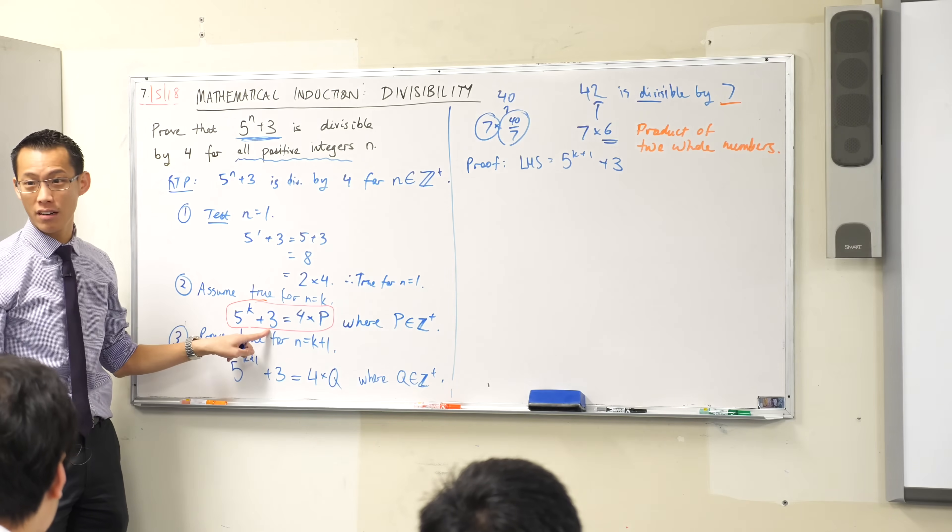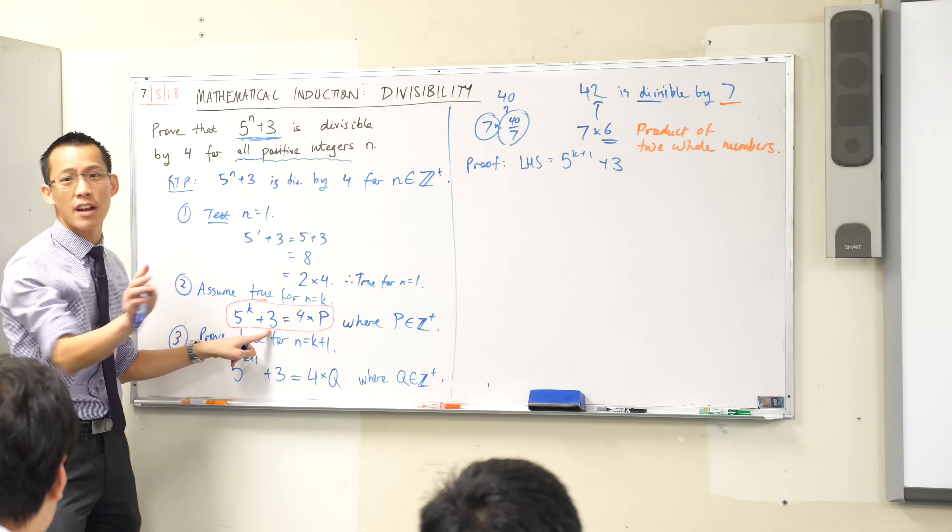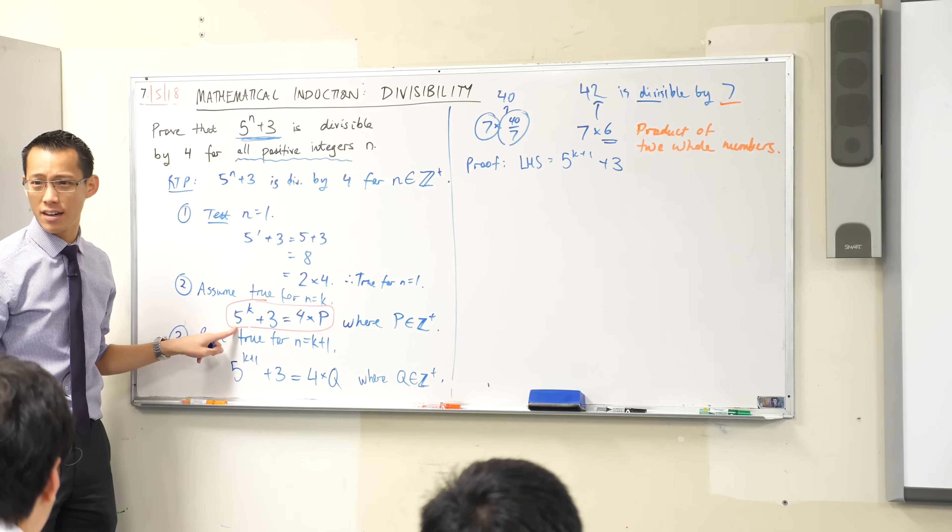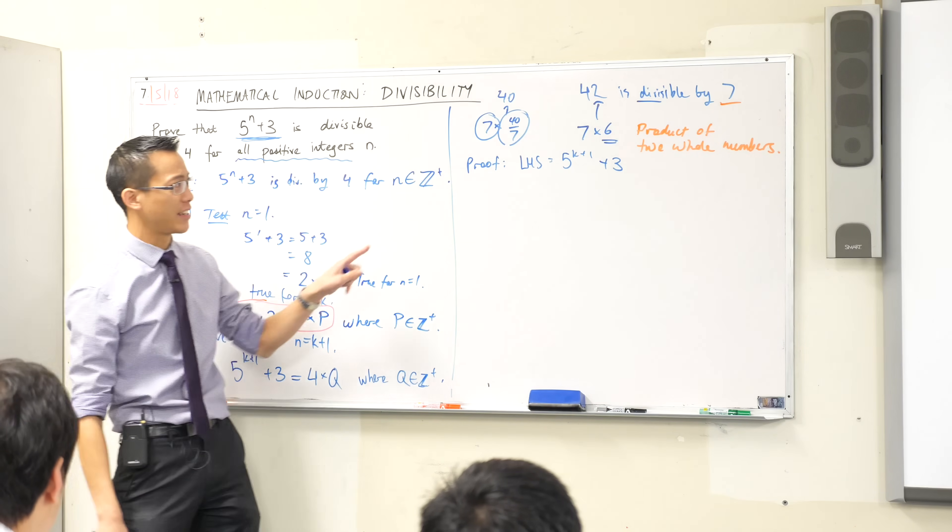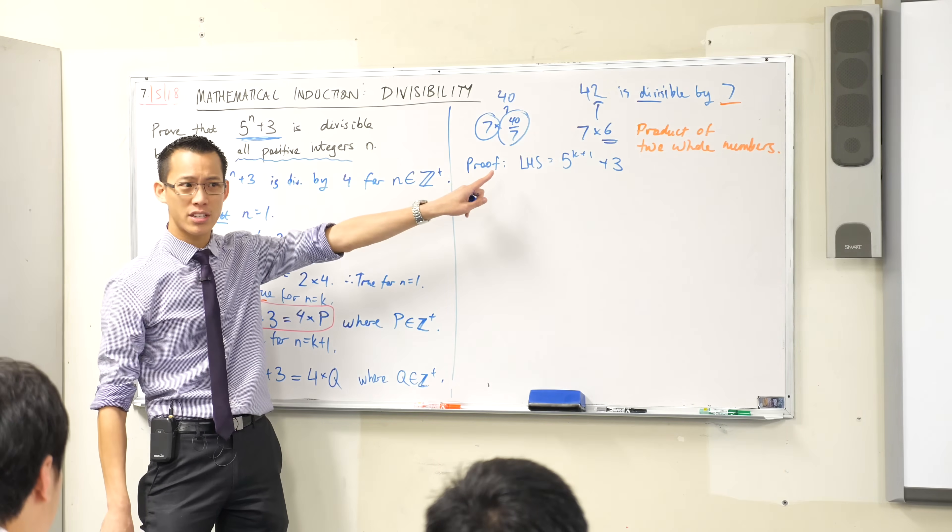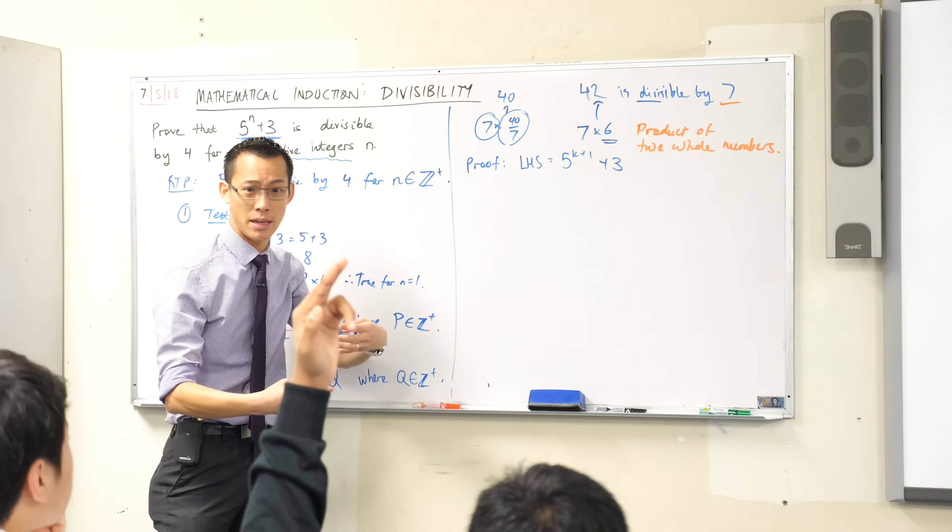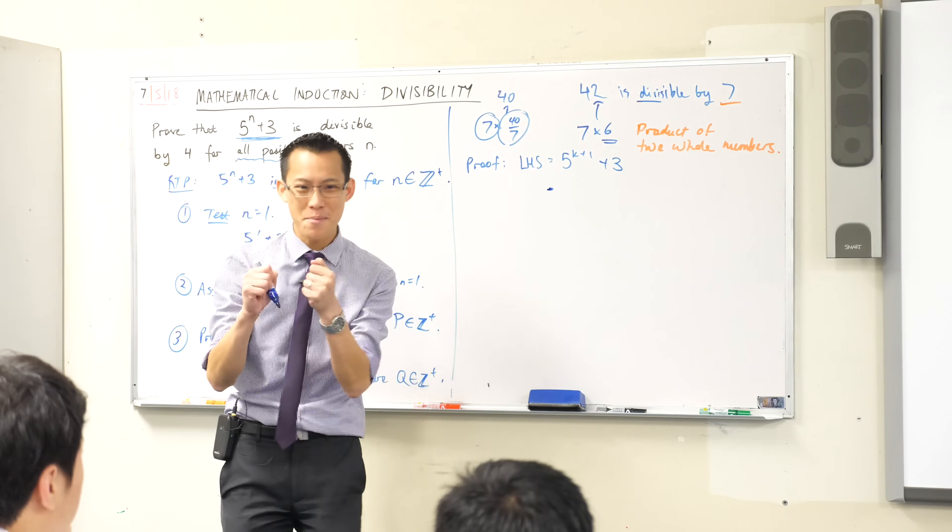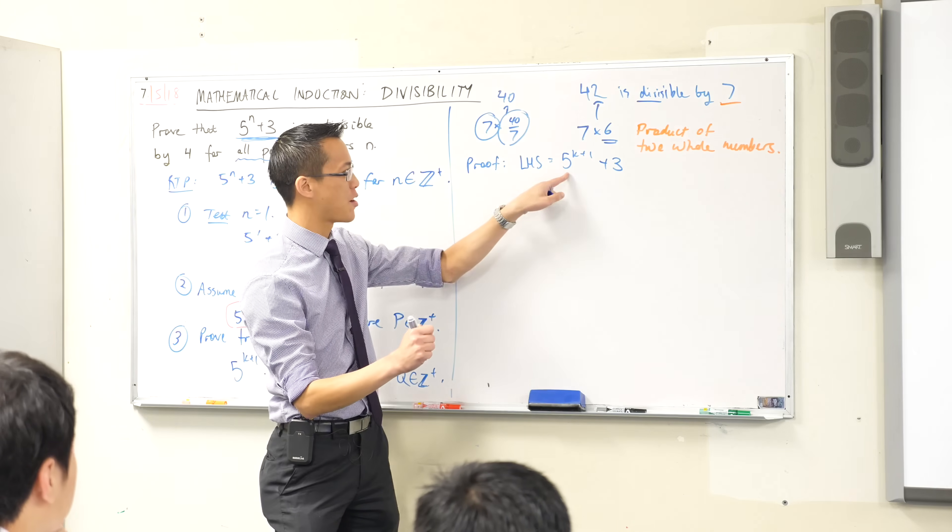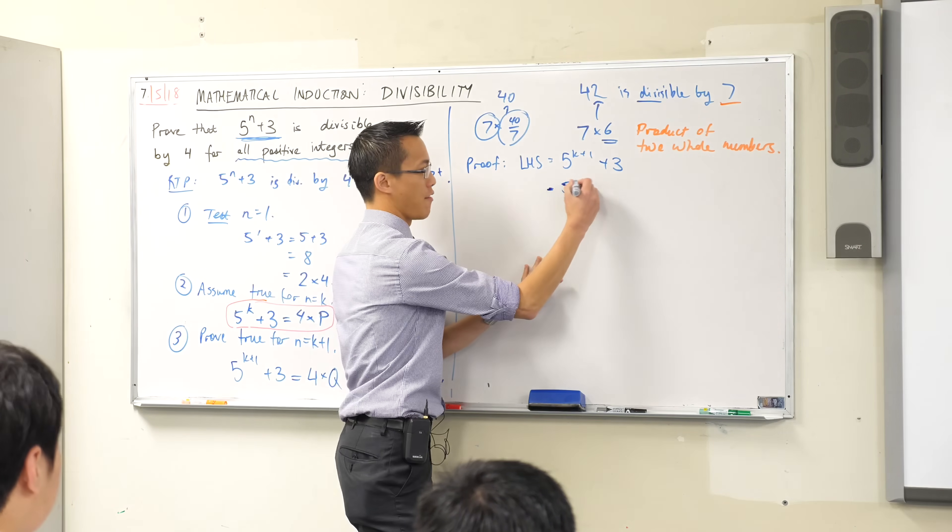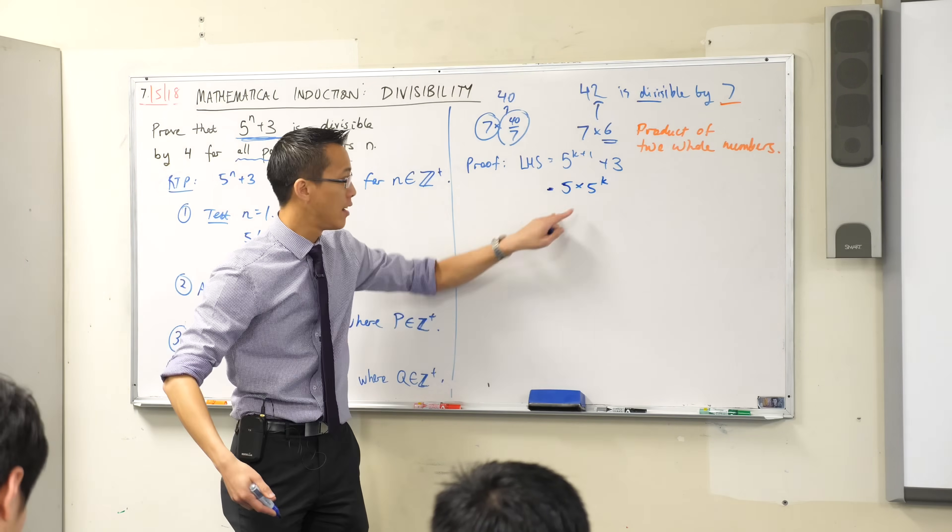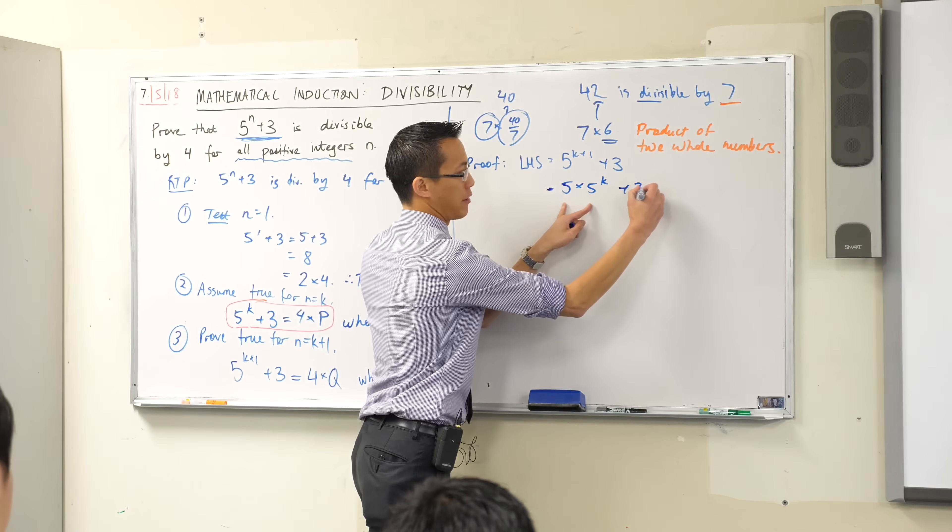5 to the k plus 3, our assumption. Do you see that this assumption, the left-hand side of this assumption, is tucked away in the left-hand side of this? We just need to tease it out a little bit. For instance, there's a plus 3 here and there's a plus 3 there. So you don't have to touch that at all. Now there's a 5 to the k here. Where is that hiding in there? Can someone tell me a way I could rewrite this that would make it a bit clearer? Yeah, Arian. Okay, if we remember our index laws, then we note that that means 5 times 5 to the k. That's what the plus 1 means, right? Multiply it again.